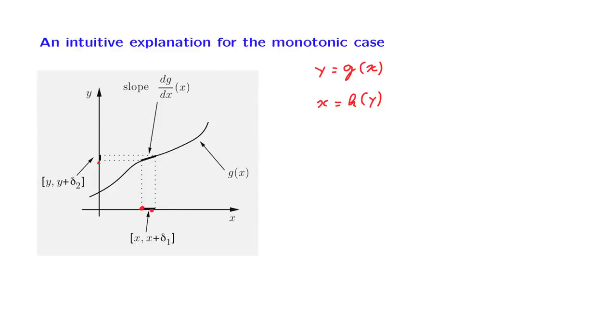Now let us consider a small interval in the vicinity of this little x. Whenever x falls somewhere in this range, then y is going to fall inside another small interval. The event that x belongs here is the same as the event that y belongs there.